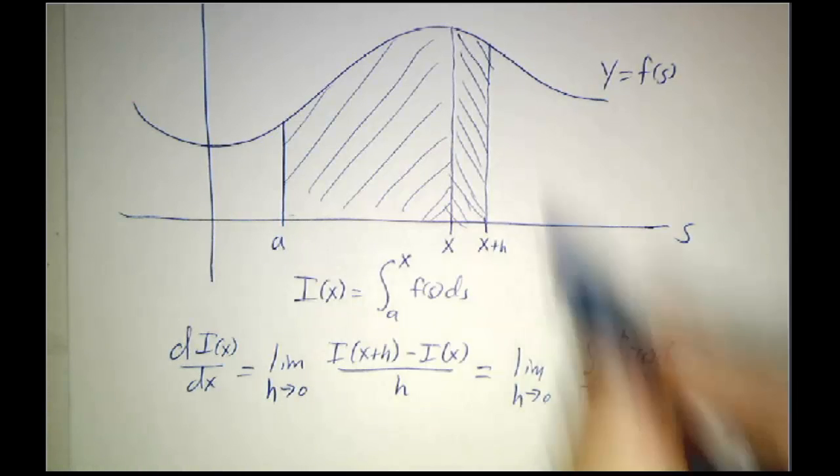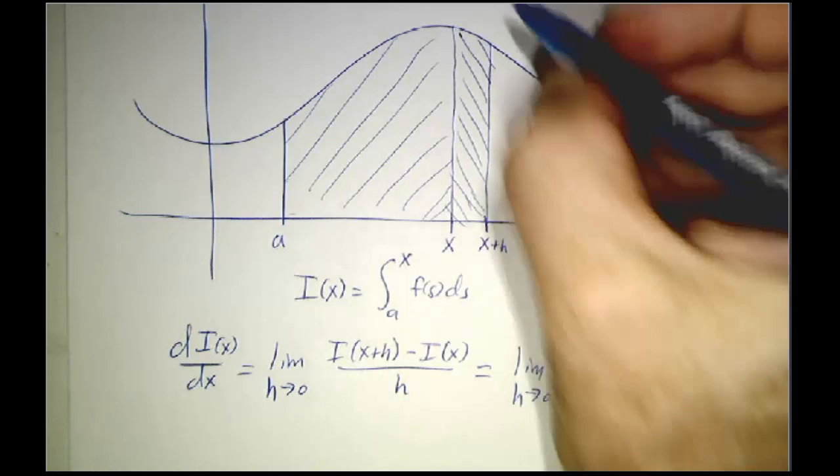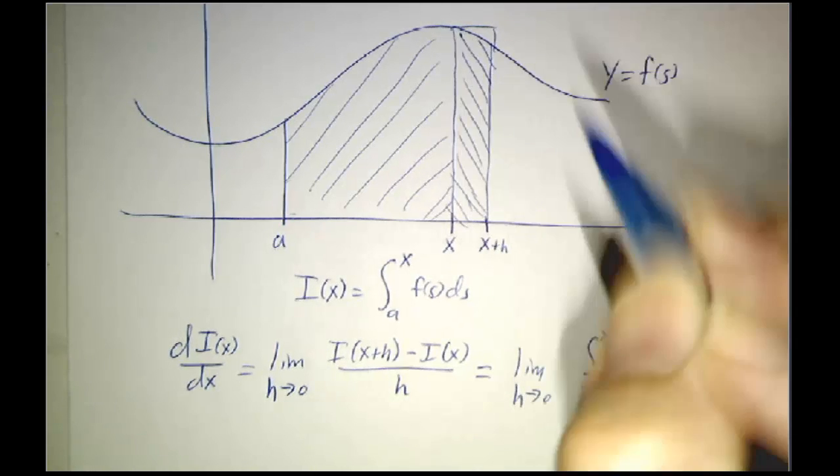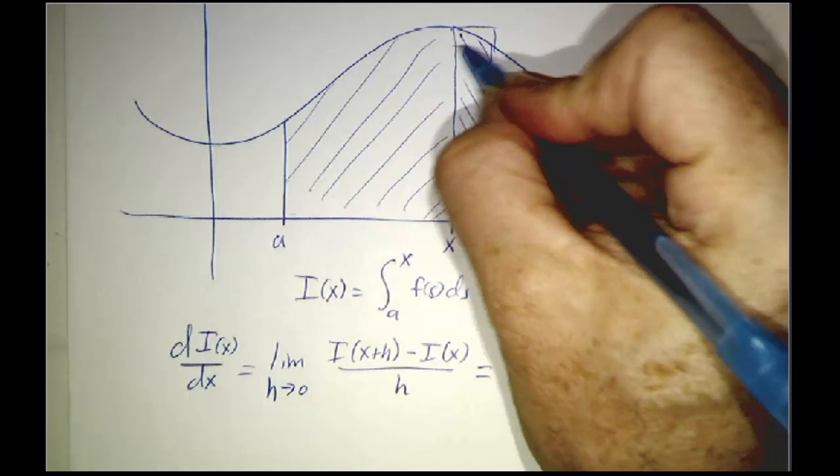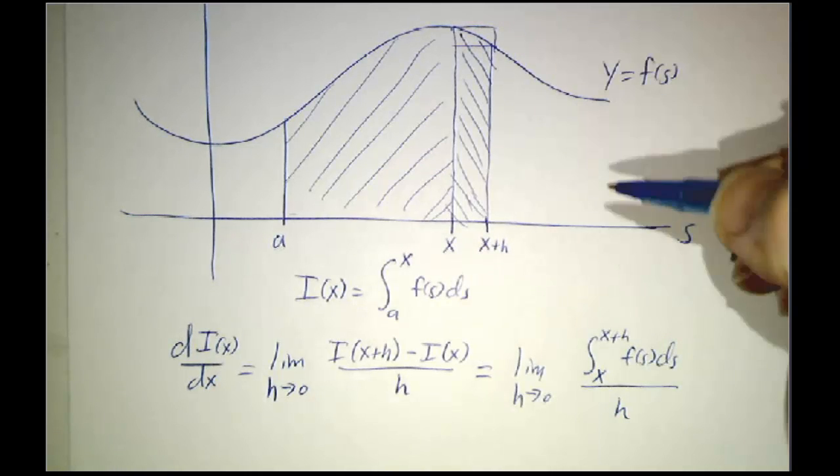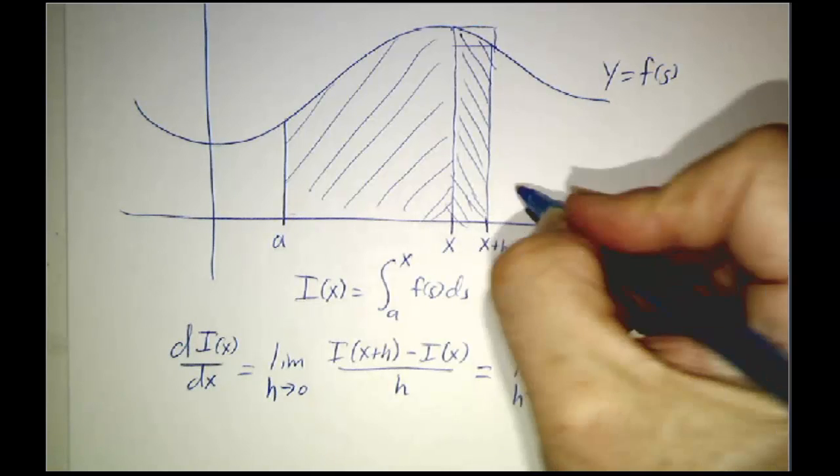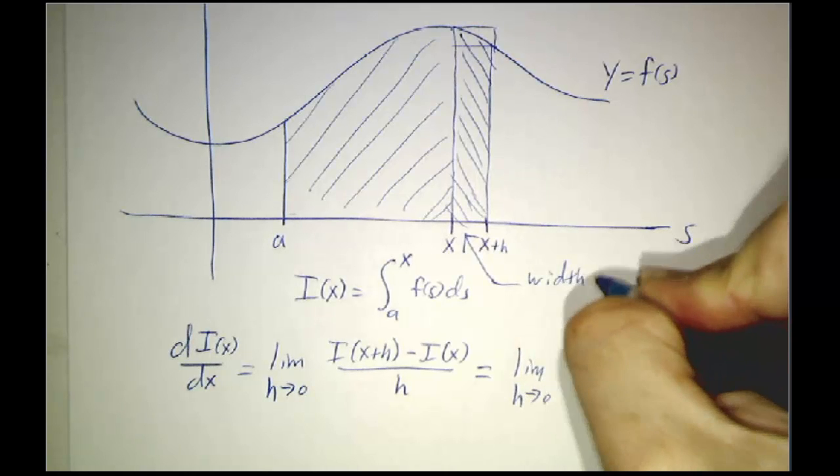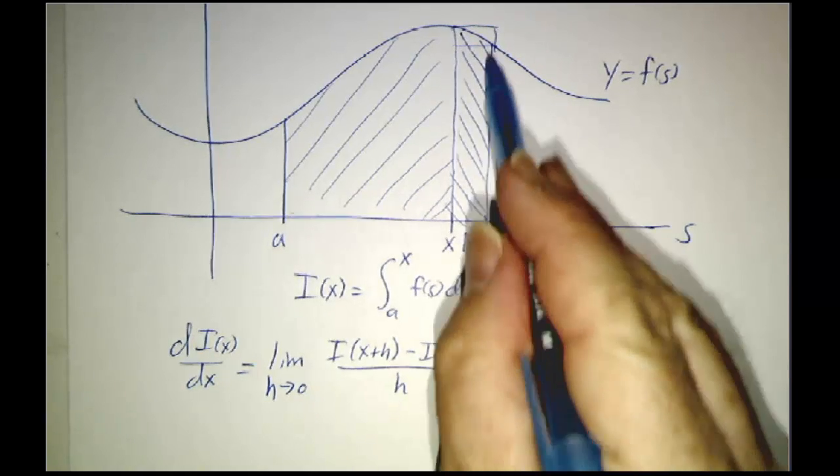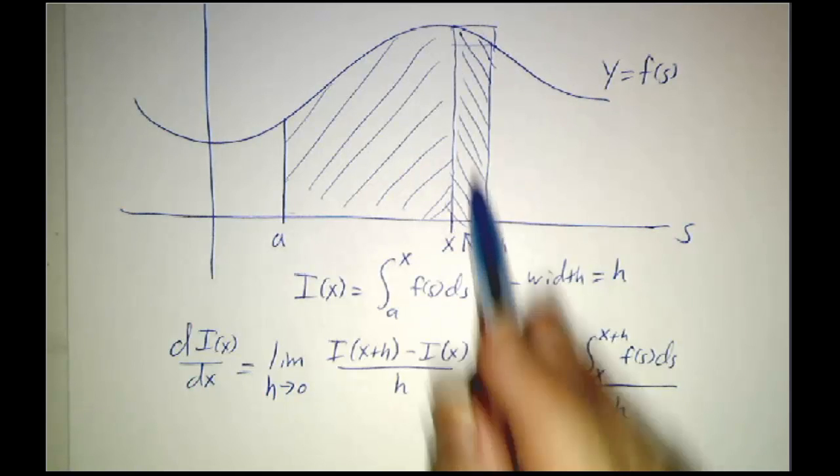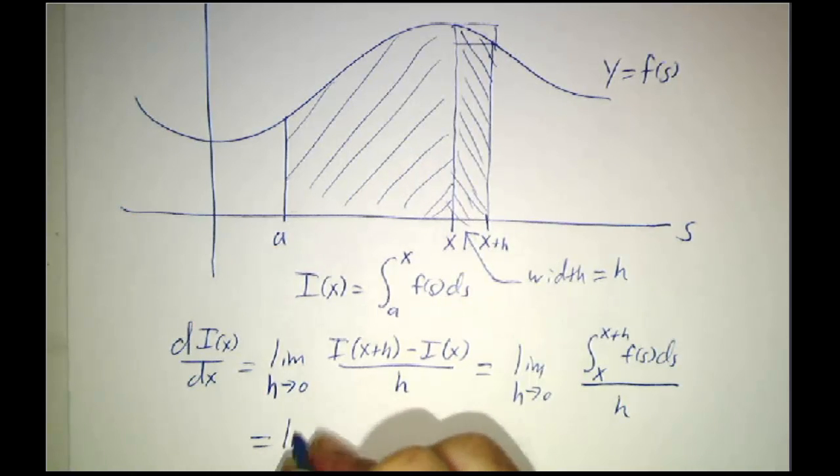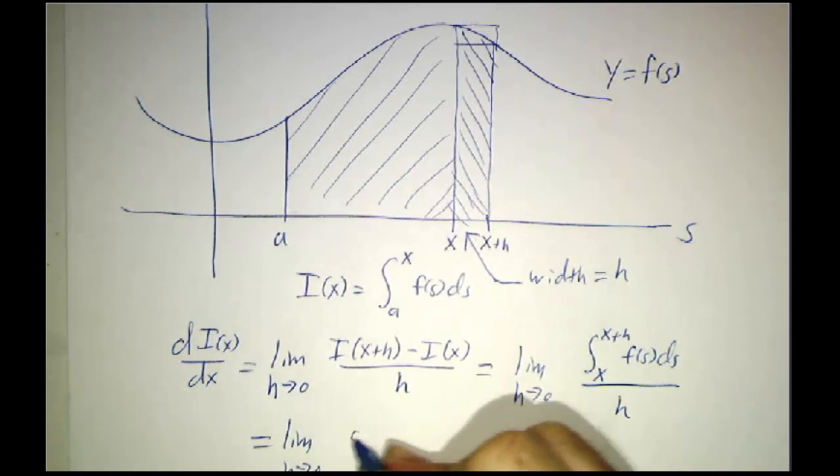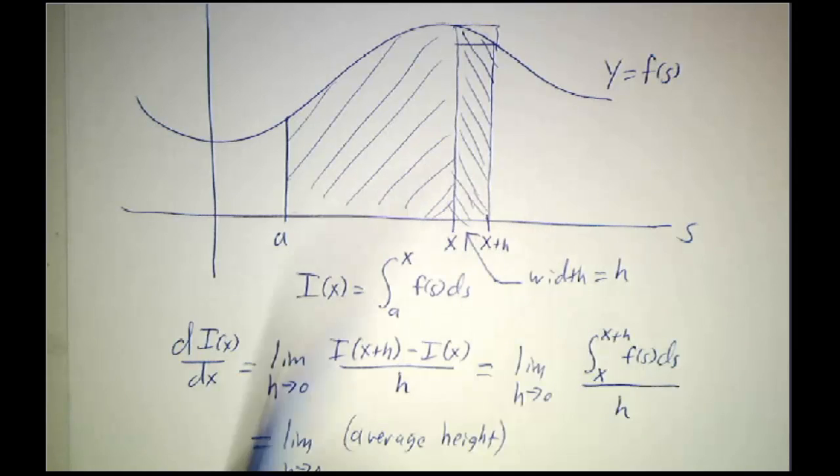So how big is this area? Well, it's roughly a rectangle. It's a little shorter than that rectangle. It's a little bigger than that rectangle. But it's roughly a rectangle. And the width of that rectangle is h. So if you take the area of this region and divide by h, what you're really doing is taking the average height. And you're averaging between x and x plus h.